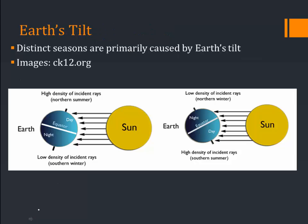If we take a look at the seasons, you can see over here we have the Earth, and in the northern hemisphere this is summer because the majority of the sun is hitting straight on in the northern hemisphere. In the southern hemisphere it's winter because there's not very much incident rays down here. And then half a year later, over on this side, it is now winter in the northern hemisphere and summer in the southern hemisphere.